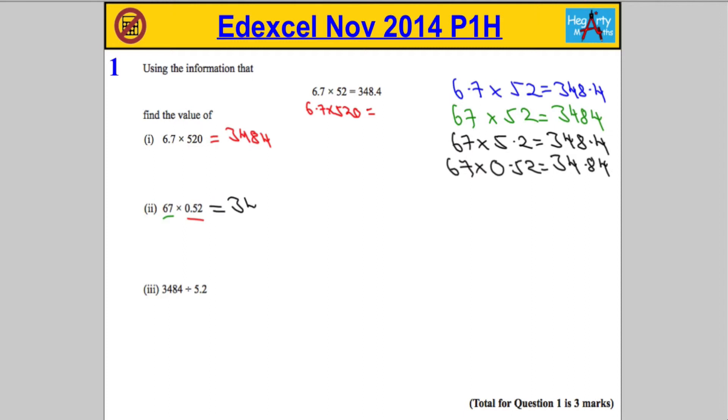And then finally we want to work out 3484 divided by 5.2. Now before I do that, what I'm going to do is rewrite the original fact but as a division, so that the digits 3, 4, 8, 4 are the first thing to appear. So in this case, I know that 348.4 divided by—and the 5 and the two digits 5, 2 are here—so again I'm going to divide by the 52.